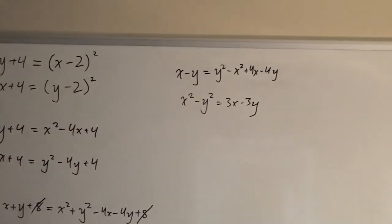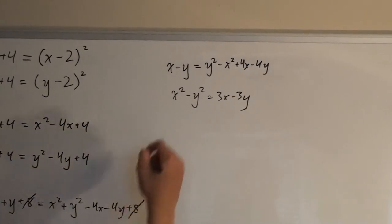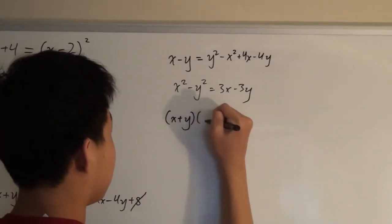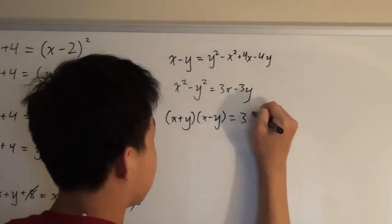And we can also simplify this even further. So, difference of squares on the left side, and then we can factor out a 3 on the right side.